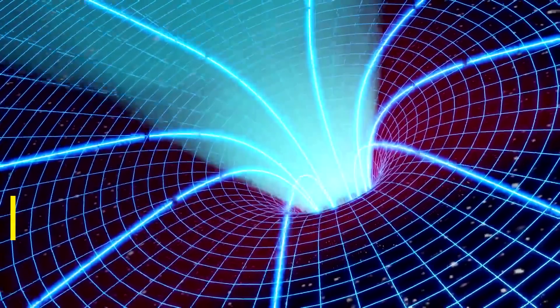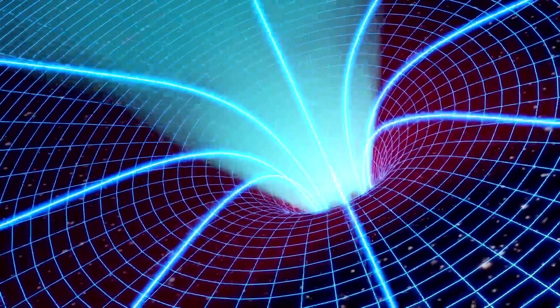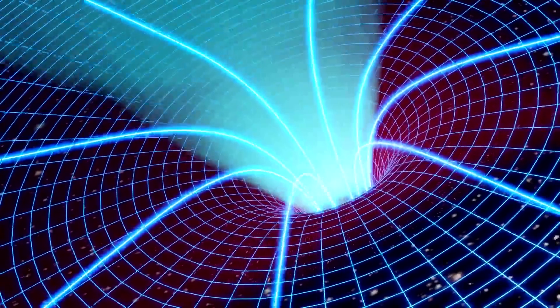Let's imagine a black hole as an infinitely deep well. Anything that falls into this well can never climb out again. But how do black holes form?